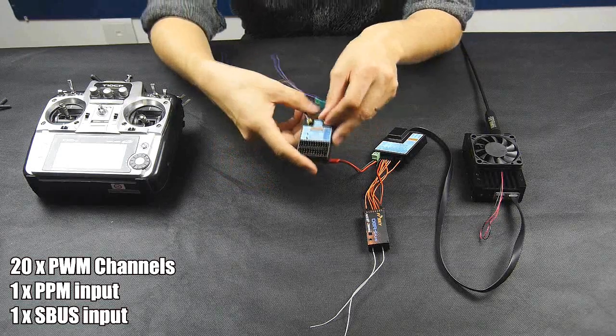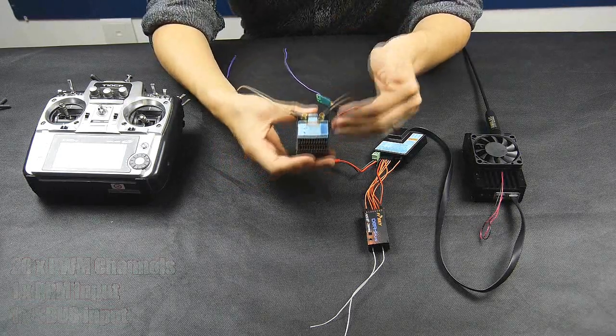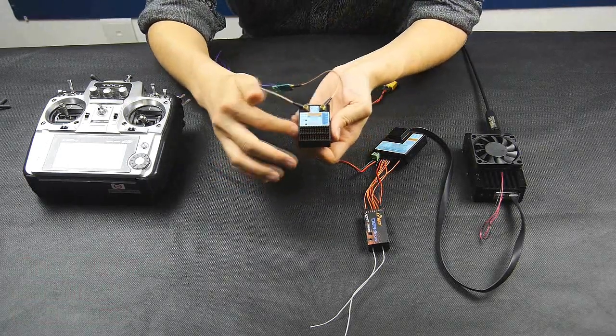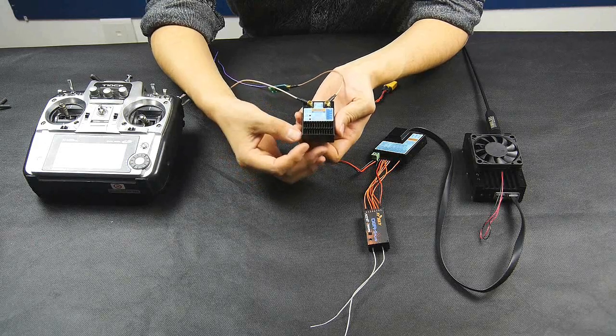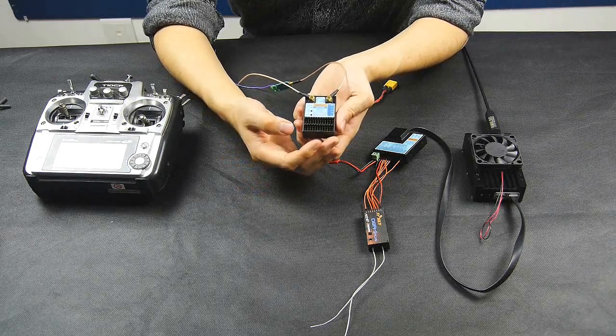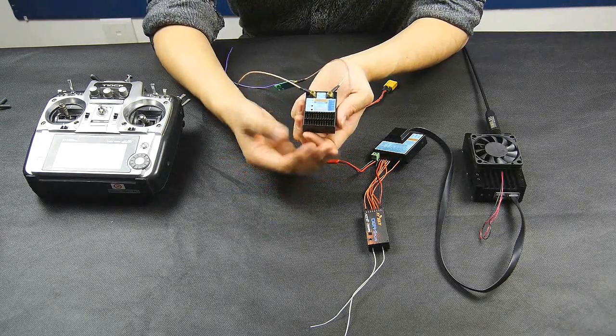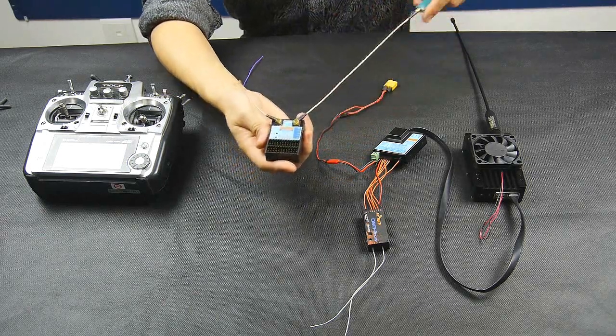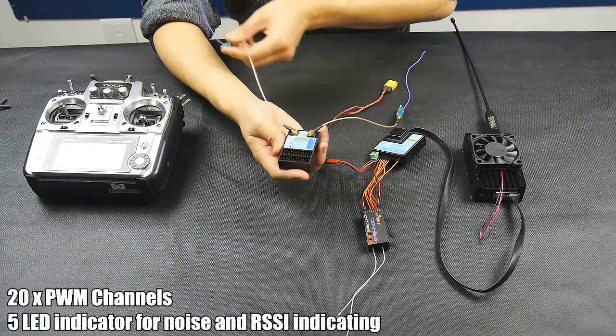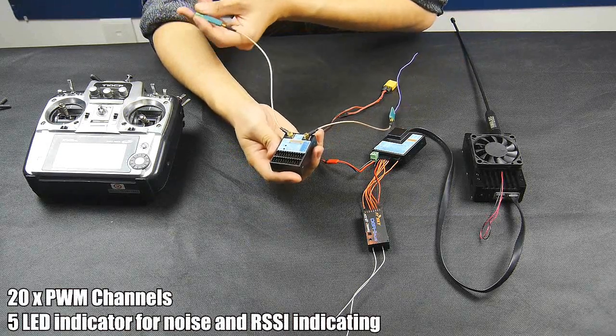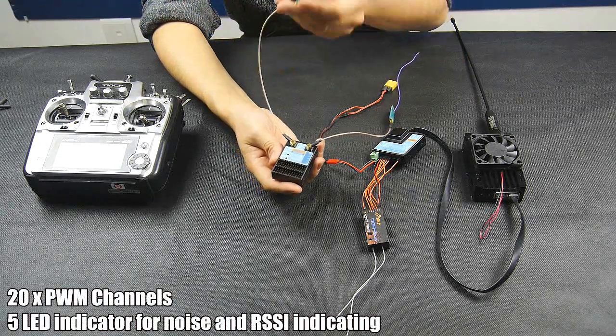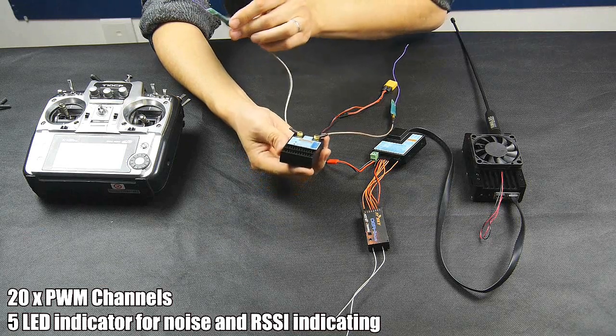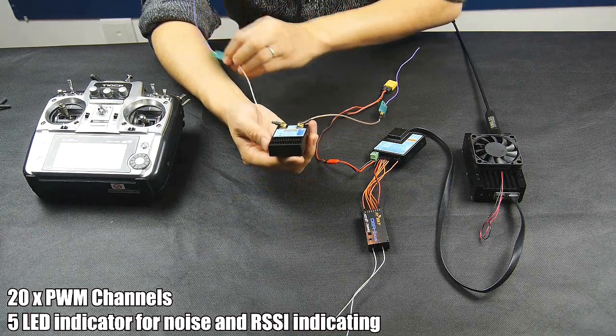Here what you're seeing is RMLC's new UHF receiver module. It has 20 pins, 20 ports on it, so you can connect up to maybe 20 servos which is very cool. On top, you can see two very special UHF receiver antennas in very different shape, meaning it may have a very nice performance.